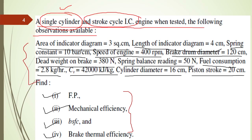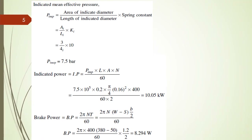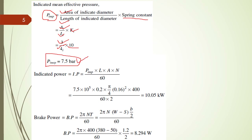We start to solve this numerical. First, we have to find out indicated mean effective pressure, PMI, which equals area of indicator diagram divided by length of indicator diagram into spring constant — that is A divided by L into K. So it is 3 divided by 4 into 10, giving an indicated mean effective pressure of 7.5 bar.